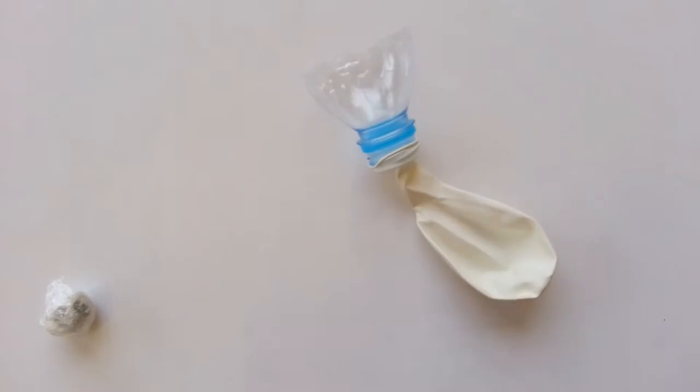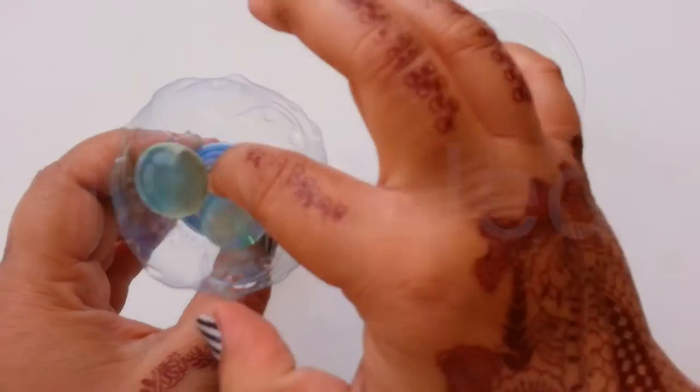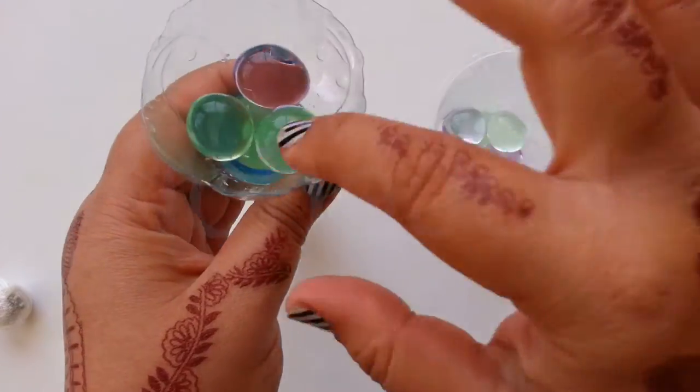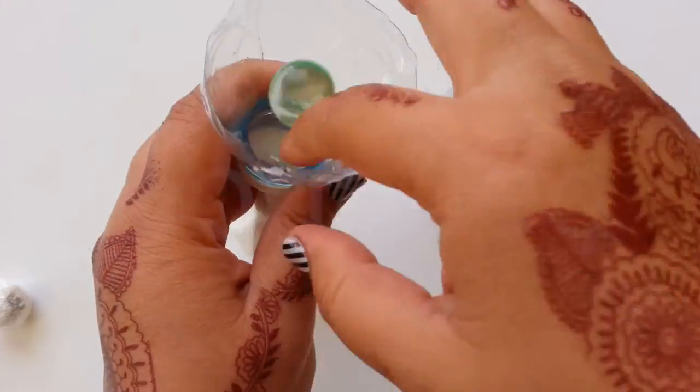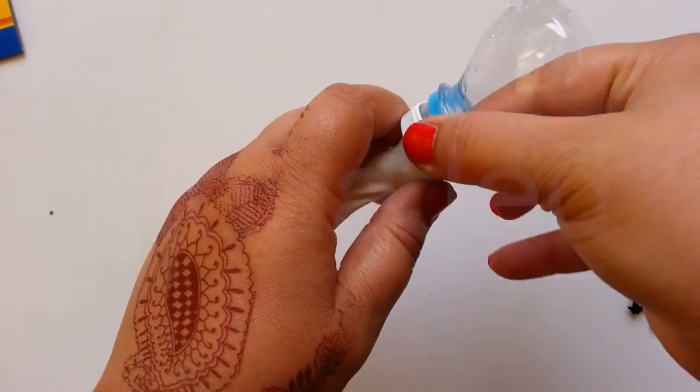Next, pour in the hydrated gel beads into the balloon. Slowly fill up the balloon. Go slow to avoid clogging the neck of the balloon. The gel beads are big so the balloon did clog but no worries, I just used my finger to aid any stuck gel beads. Do this gently so as to avoid bursting the gel balls.